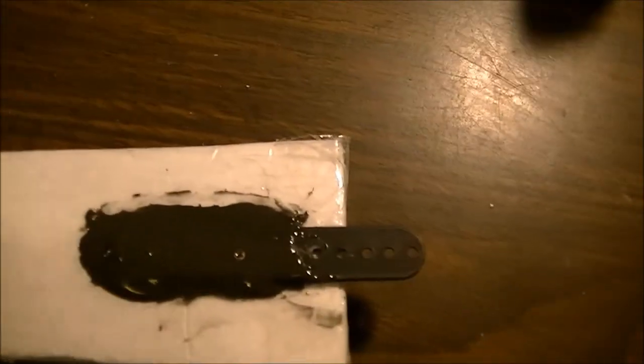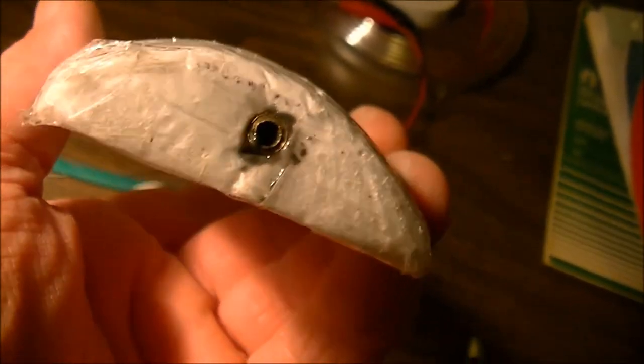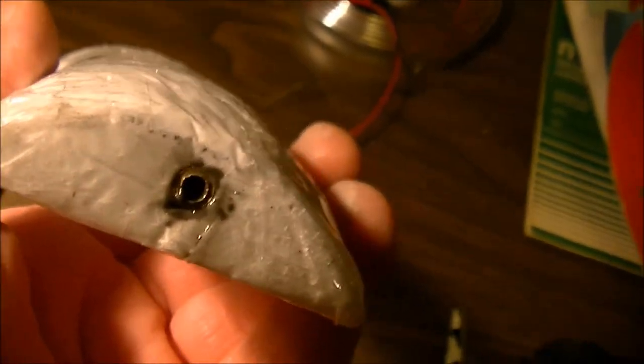We decided we're going for JB Weld and this sucker ain't never coming apart. I just put a brass bushing in the back here with some JB Weld to hold it in secure, and that'll be for the locking pin.